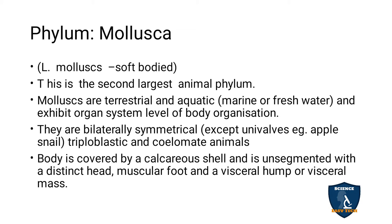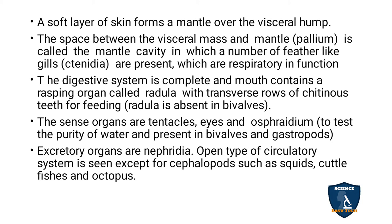You can see in the snail the rounded bulge — the hump. Just as you know about the camel hump or bull hump, here they have the visceral hump. Visceral means it is inside the internal body — which we call the visceral hump or visceral mass. A soft layer of skin forms a mantle over the visceral hump.